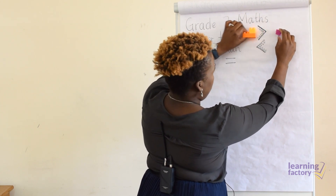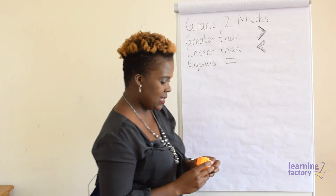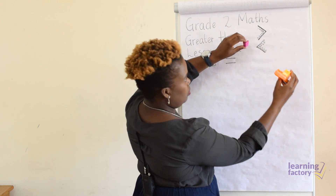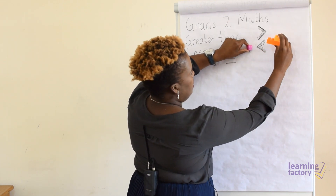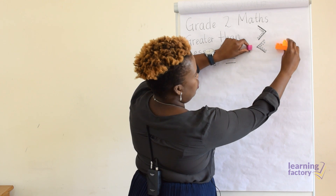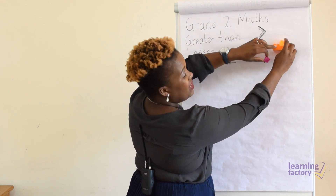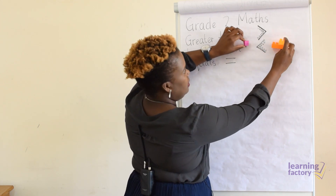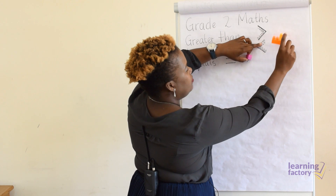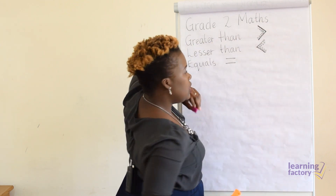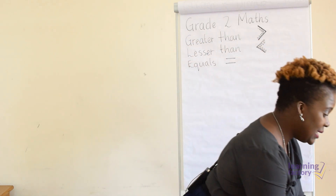If we want to place them by the lesser than sign, we'd have to swap them around — put the sharpener on this side and the blocks on this side, because our crocodile is always eating the bigger object or the bigger number. So the sharpener is lesser than the building blocks. Do you now understand how to use these signs?